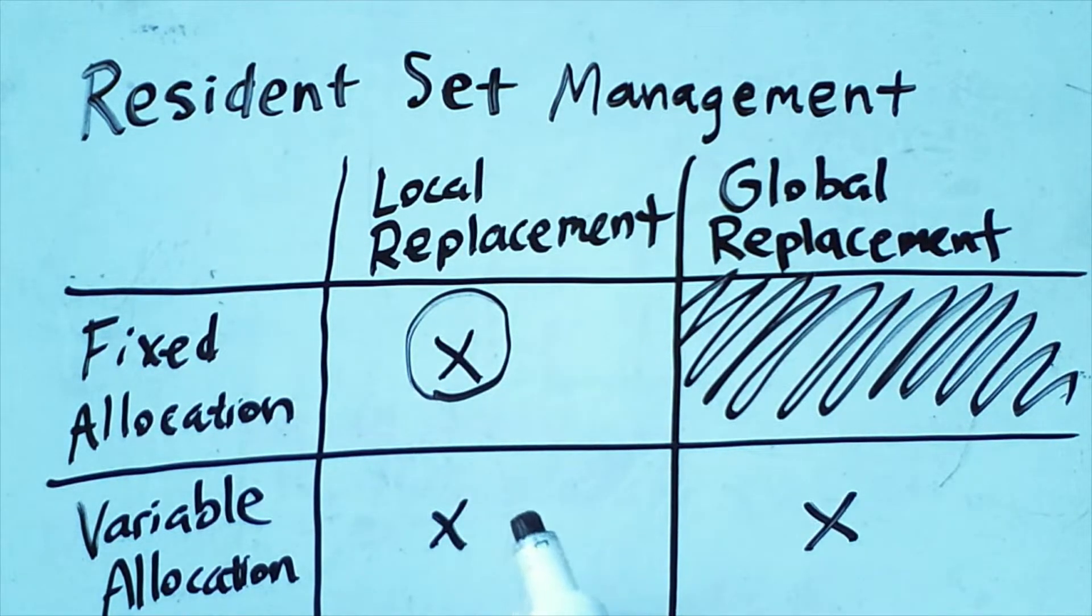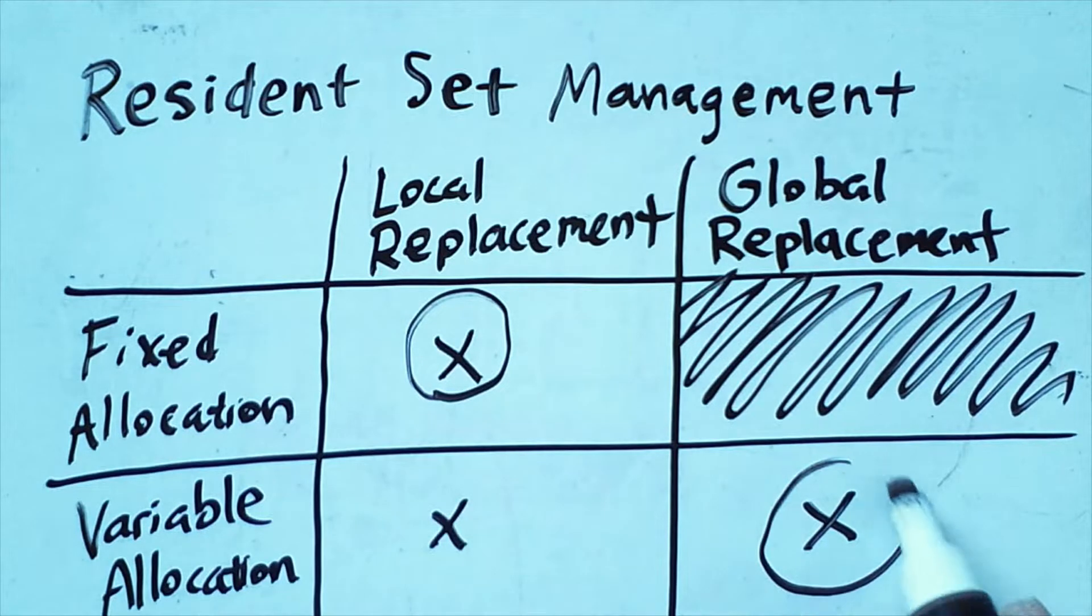This is very similar to this local replacement and fixed allocation scheme where each process has its own small fixed set of frames, but you could also think of the previous video as being used in conjunction with a global replacement policy.